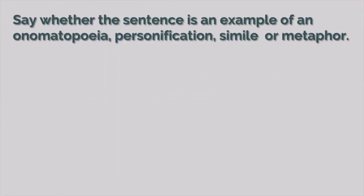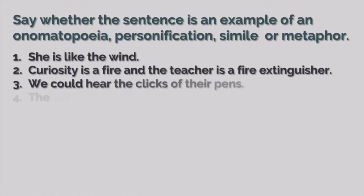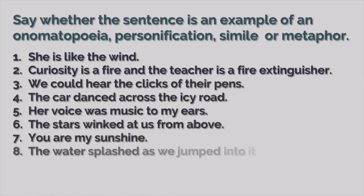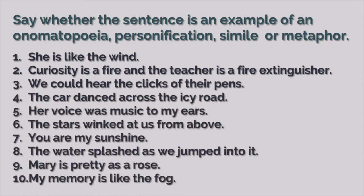So, let's do some exercises. Say whether the sentence is an example of onomatopoeia, personification, simile, or metaphor. You can use O for onomatopoeia, P for personification, S for simile, and M for metaphor. Pause the video and tell me your answers.